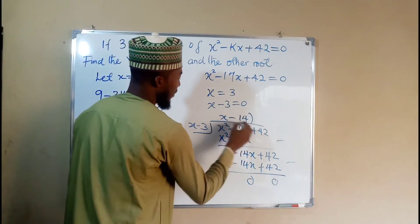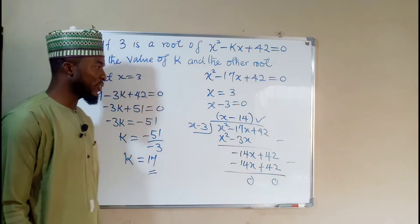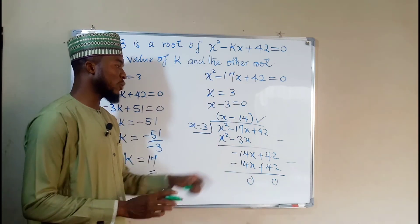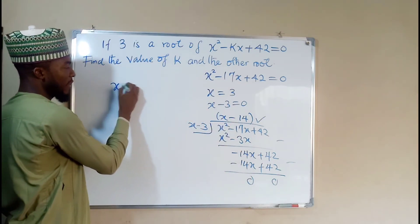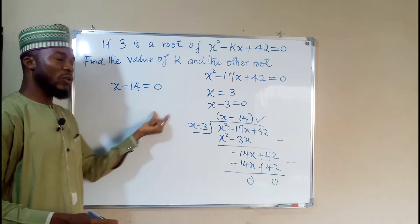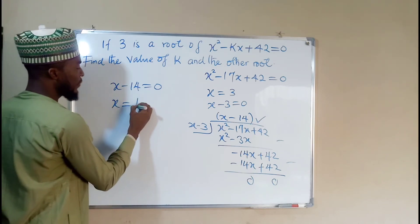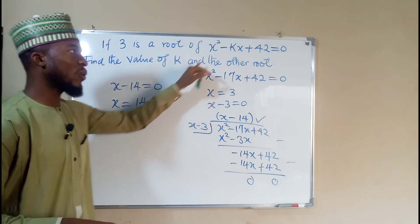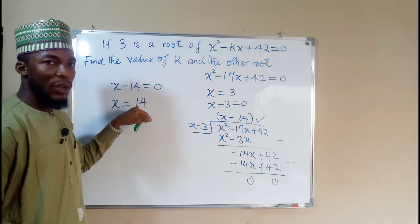Therefore, x minus 14 is another factor of this quadratic equation. Hence, to find the other root of this quadratic equation, we are going to set this to be equal to 0. x minus 14 equals 0. If negative 14 crosses over, it becomes positive. x equal to positive 14. And positive 14 is the second root of this quadratic equation. So we have obtained the other root as required.